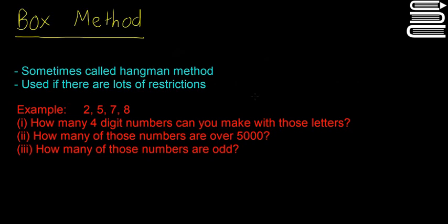This is the last topic in probability that we're going to look at, and it's probably one of the more difficult ones — it can be pretty confusing. Try and watch the videos a few times; it is quite important because a lot of the time they're going to ask difficult questions. So sometimes it's called the box method, or sometimes the hangman method. It's used if there are lots of restrictions.